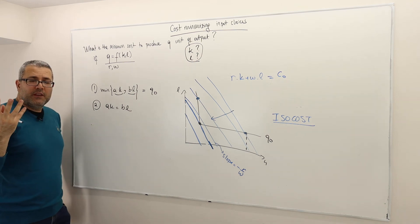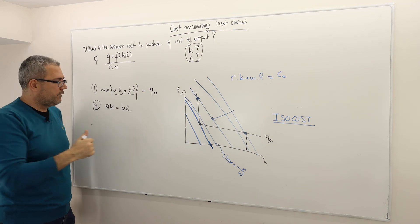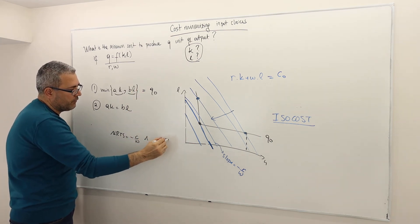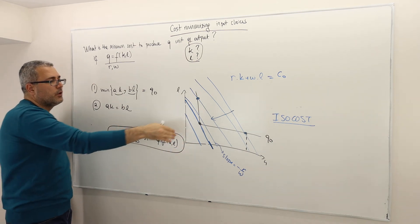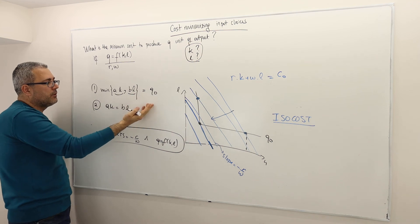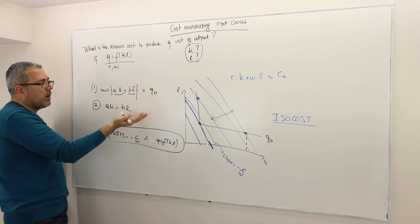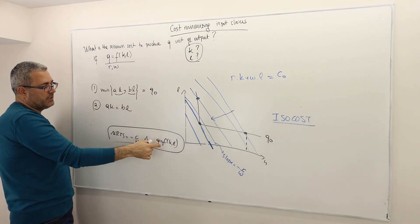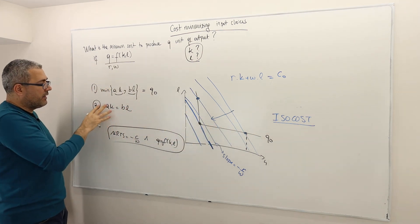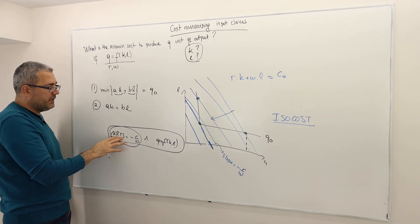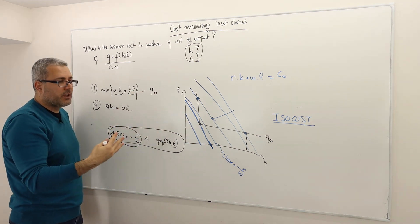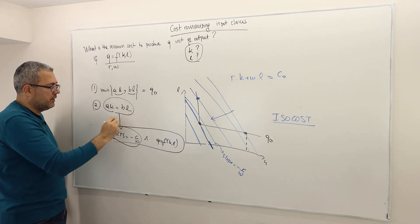So there are two approaches. The first is to use the Lagrangian, or use the idea that MRTS equals minus price ratio combined with the constraint Q equals F of KL. The second approach is to graph the isocost and isoquant curves and figure out where the optimal should be. In either case, you need two equations because you have two unknowns: K and L.